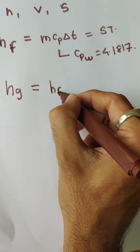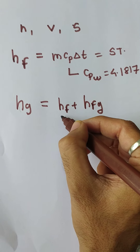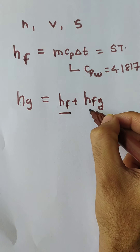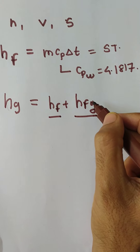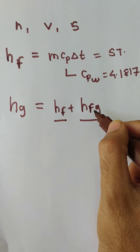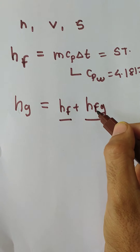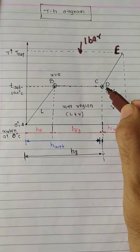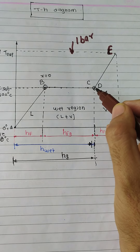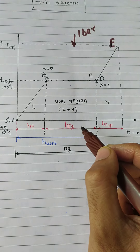The formula becomes HG = HF plus HFG, where HF is the sensible heat of water and HFG is the latent heat of evaporation of water. It is latent heat because the suffix has two words — fluid and gas, liquid plus vapor. So when the exam asks to calculate HG of dry steam, we put the value of HF plus HFG.